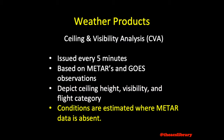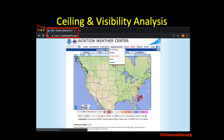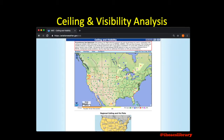To access a current ceiling and visibility analysis, go to www.aviationweather.gov and under the Observations tab, press Ceiling and Visibility and you will be brought to this page.